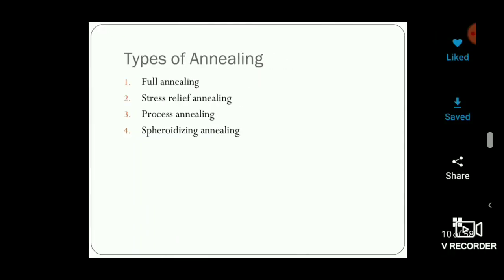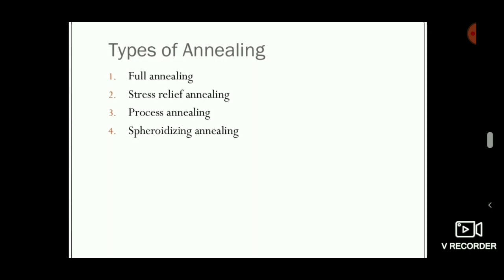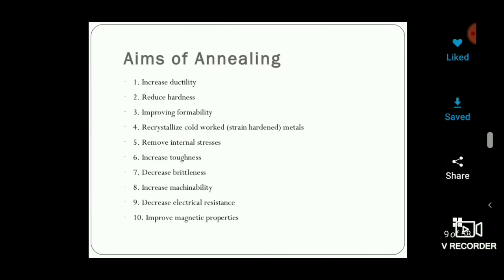There are different types of annealing: full annealing, stress relief annealing, process annealing, and spheroidizing annealing. Using this process, metals can be made more stress-free, ductile, and of reduced hardness.